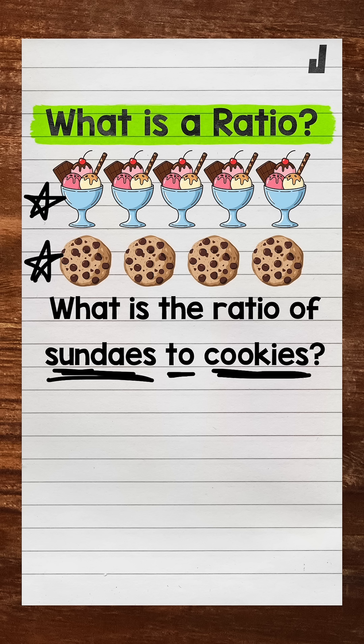Our first way that we're going to write this out, we can use the word 'to'. So the number of sundaes — five — to the number of cookies — four. So the ratio of sundaes to cookies is five to four. And that's it. That's our ratio. It shows the relationship between sundaes and cookies.